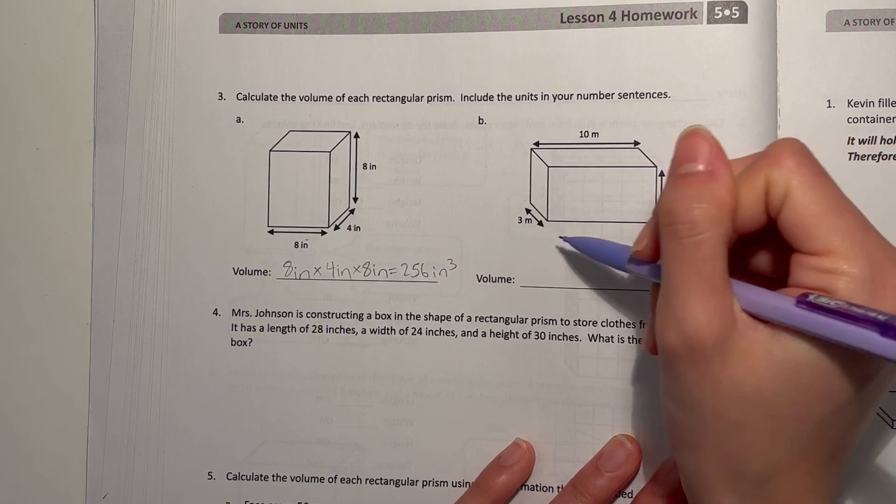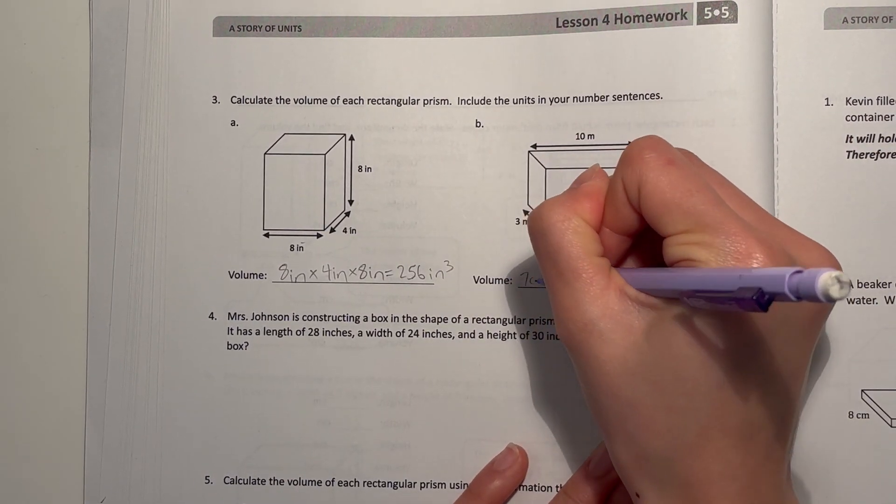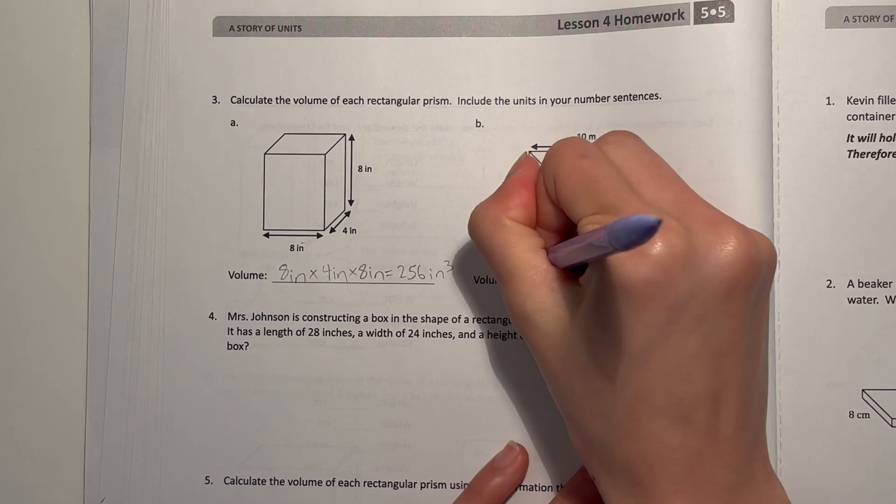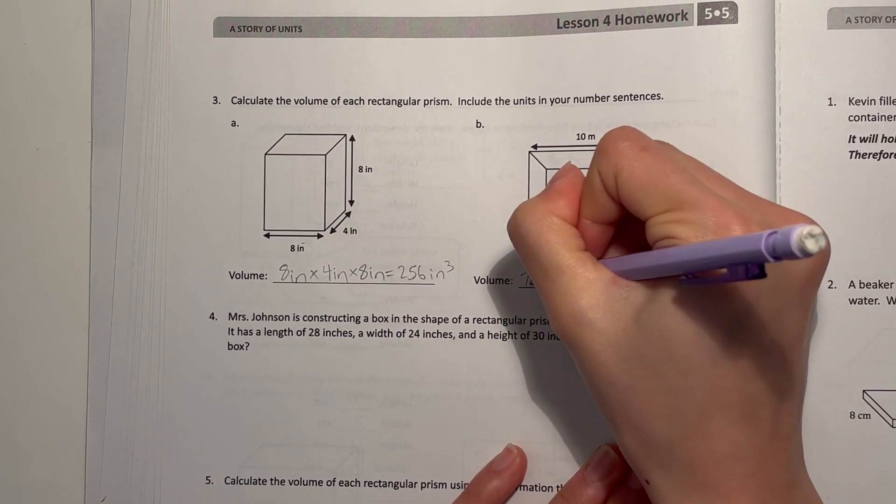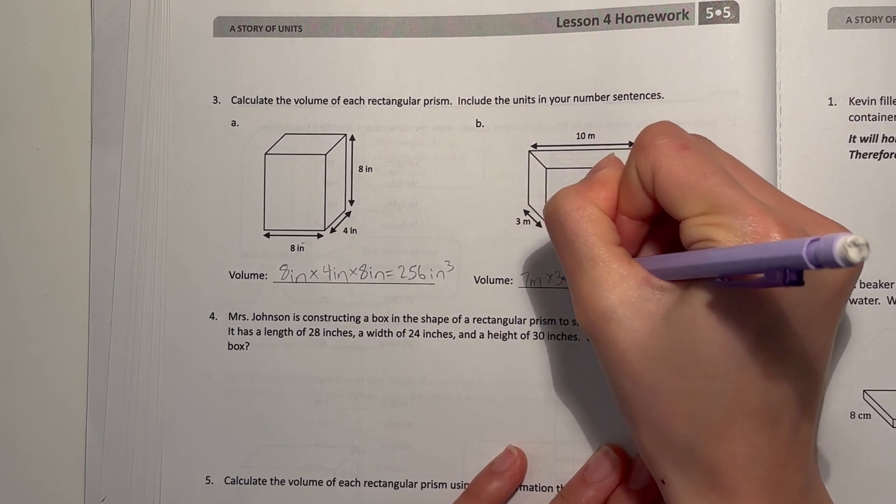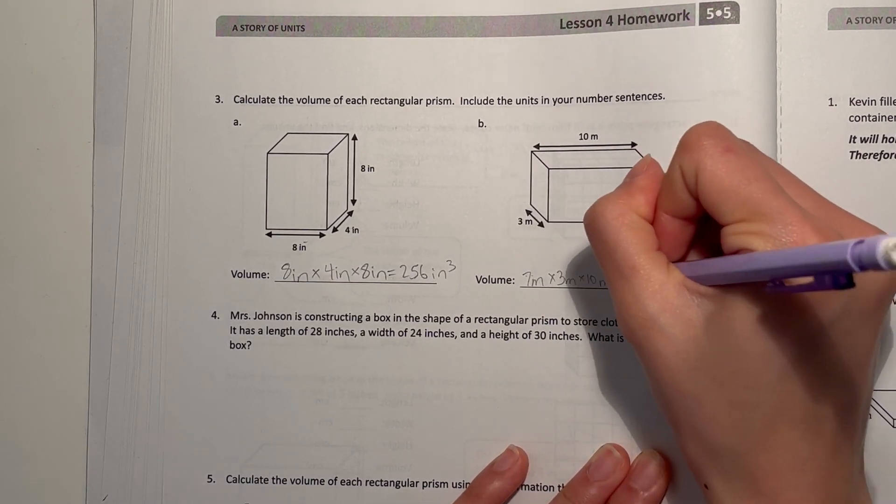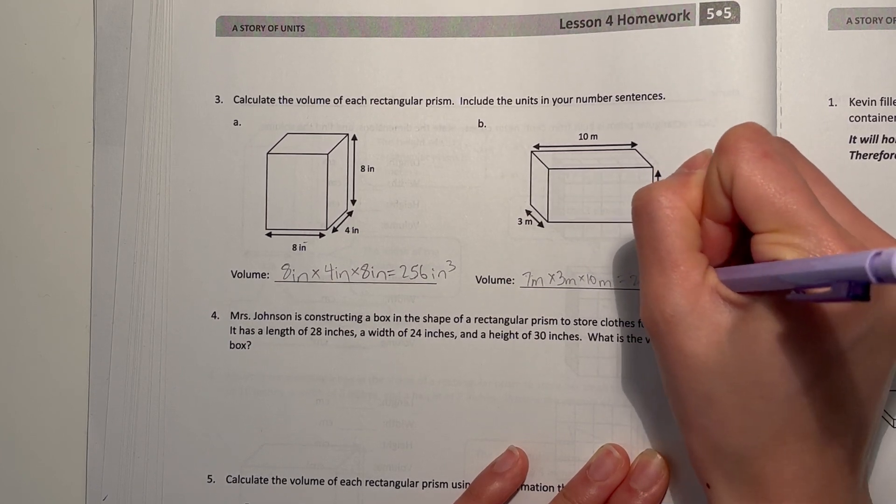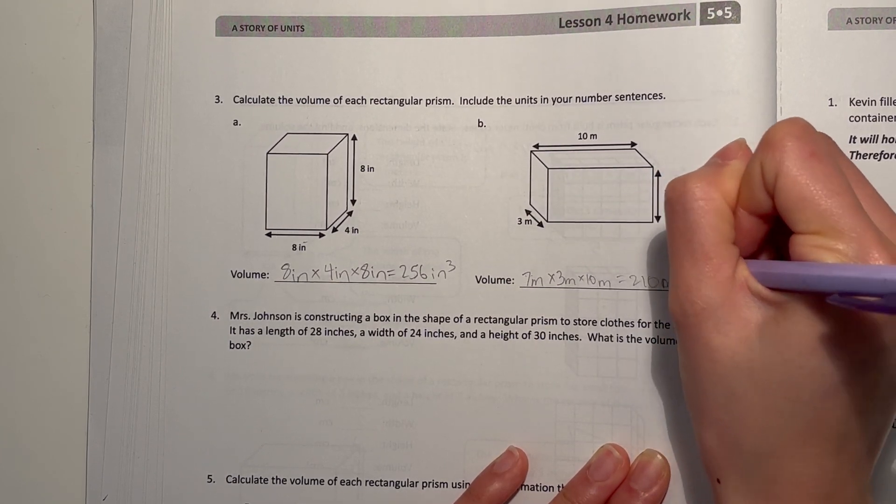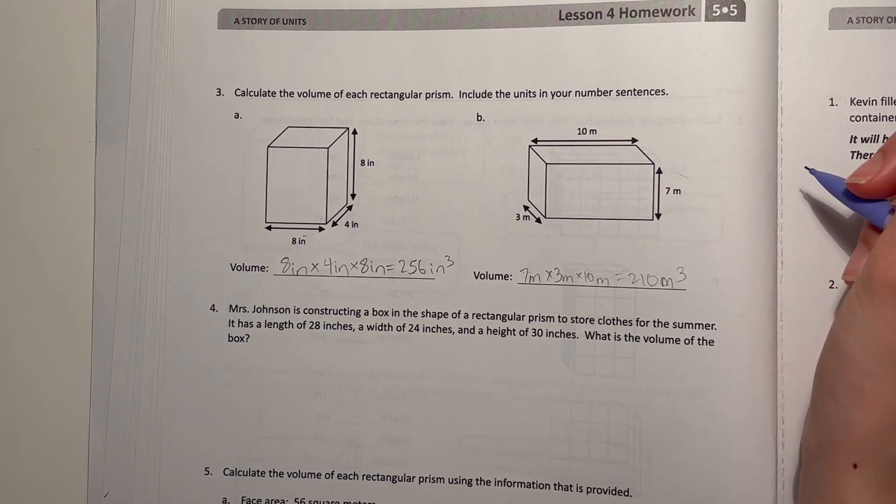And here we have seven times three times ten. Watch out for the unit change. That's ten times 21, which is added here at the end, so 210 meters cubed.